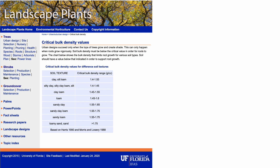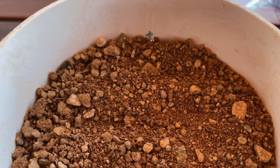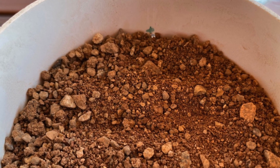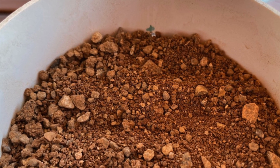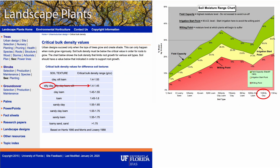1.55 grams per centimeter cubed is above published values for a silty clay, but I'm going to stick with that texture for Ratcliffe's thresholds based on the observed soil texture and relatively good drainage of soils in my area. The reason for the difference may be that I simply have a greater clay component or maybe even some stones in my sample that might be driving bulk density a little higher than what's suggested in the table.